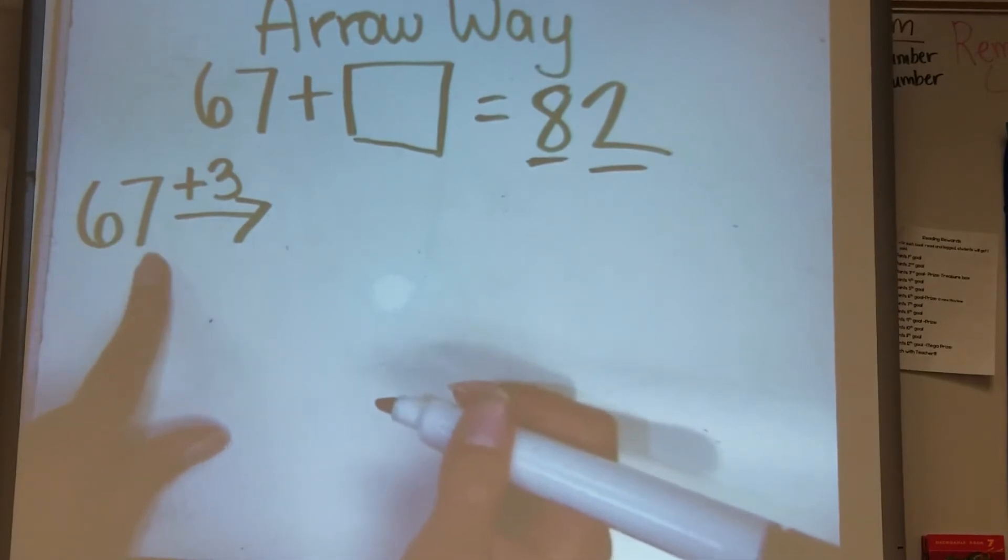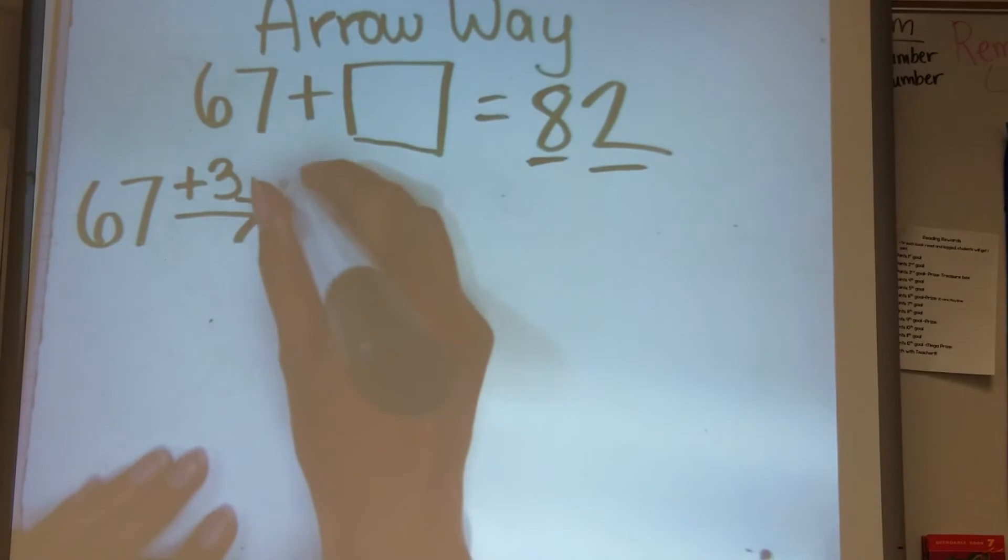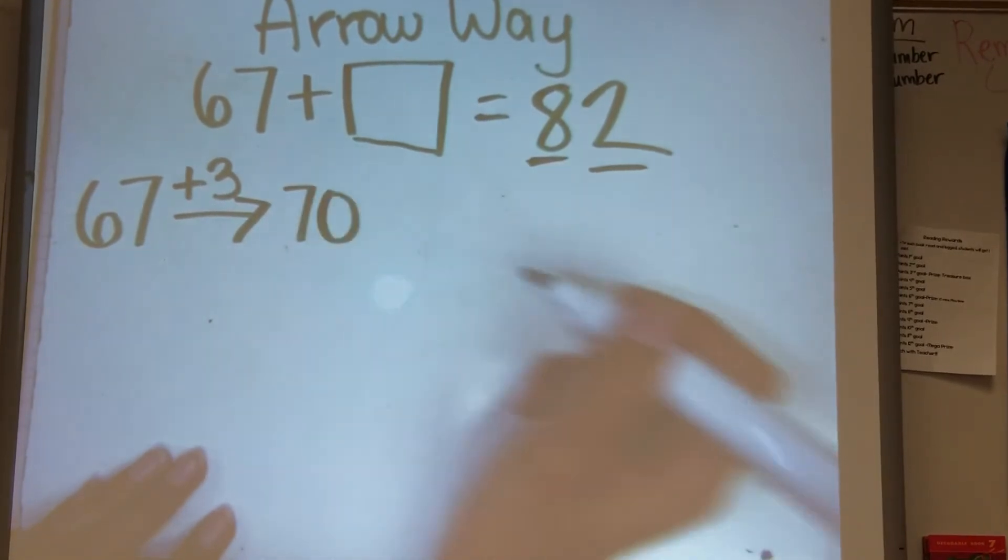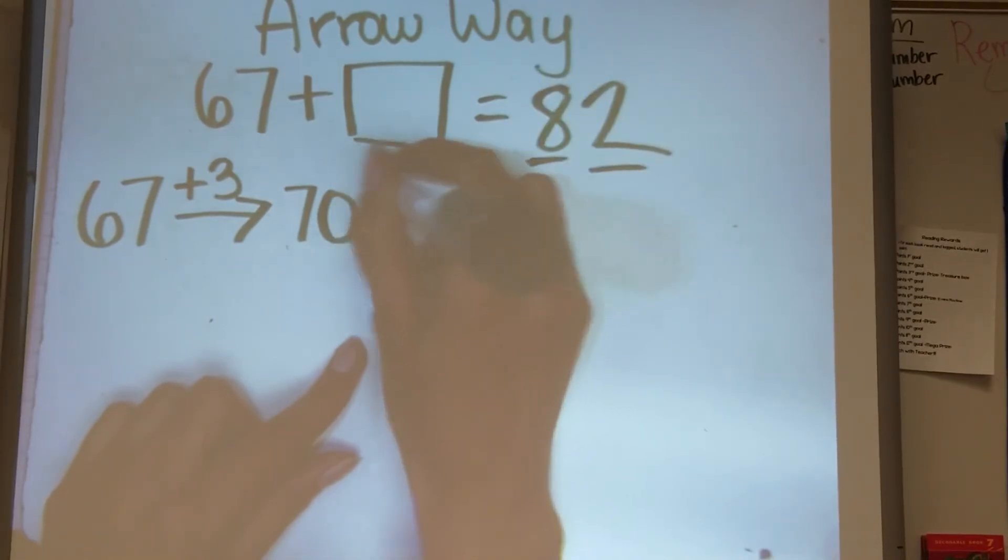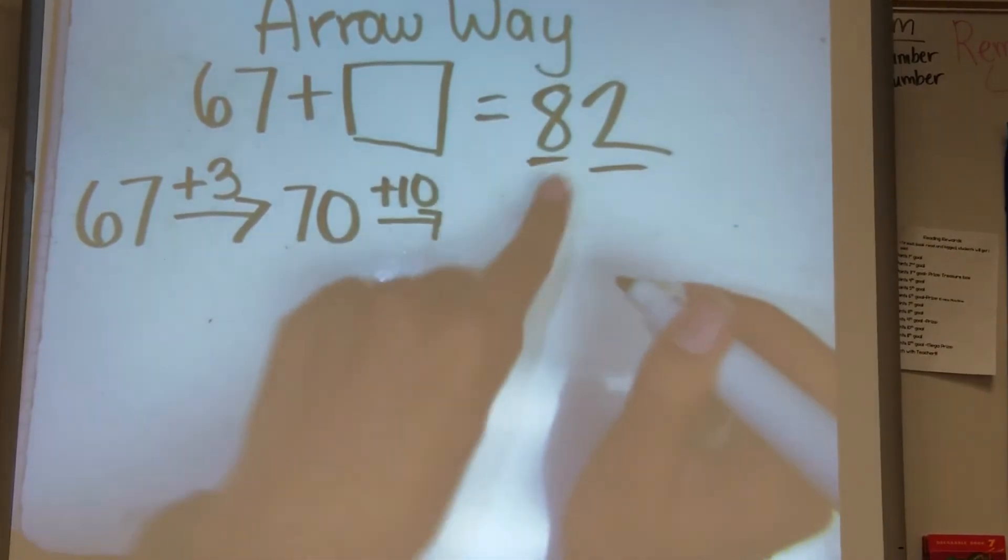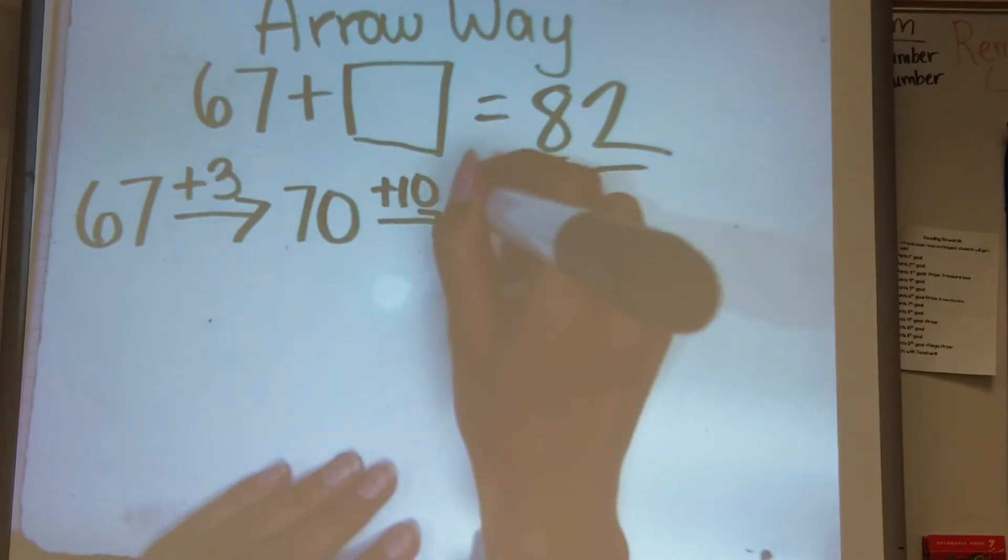67 plus 3 is 70. Now we have a friendly 10. We can now add another 10 to make it 80, which is the number we want.